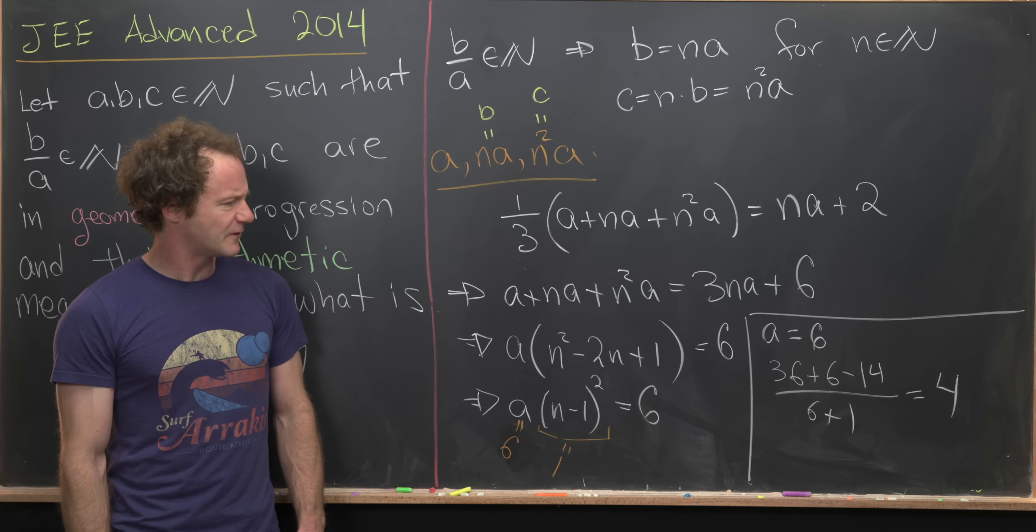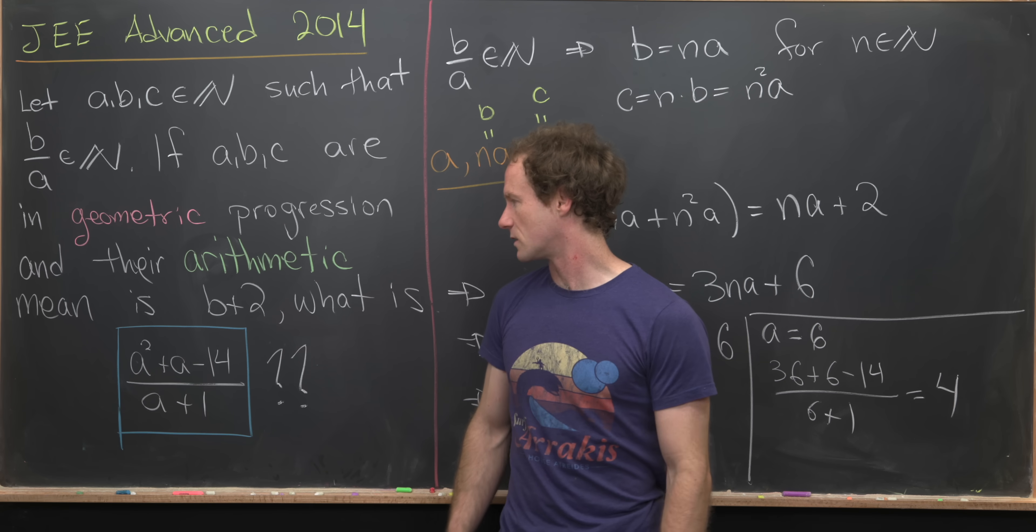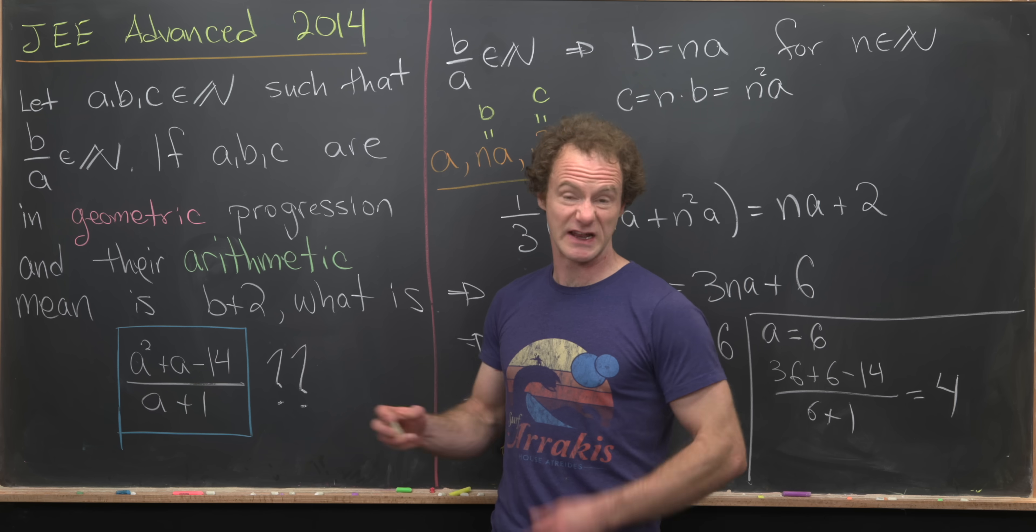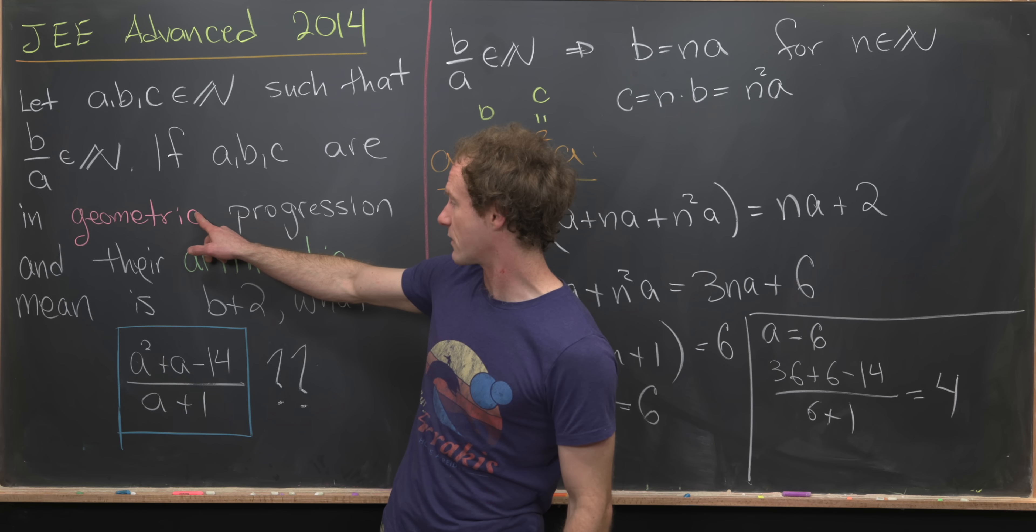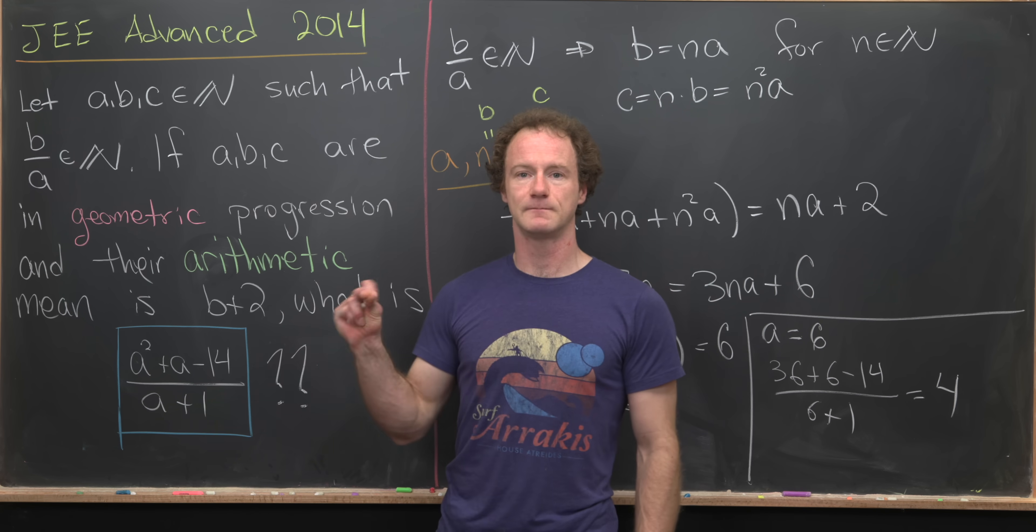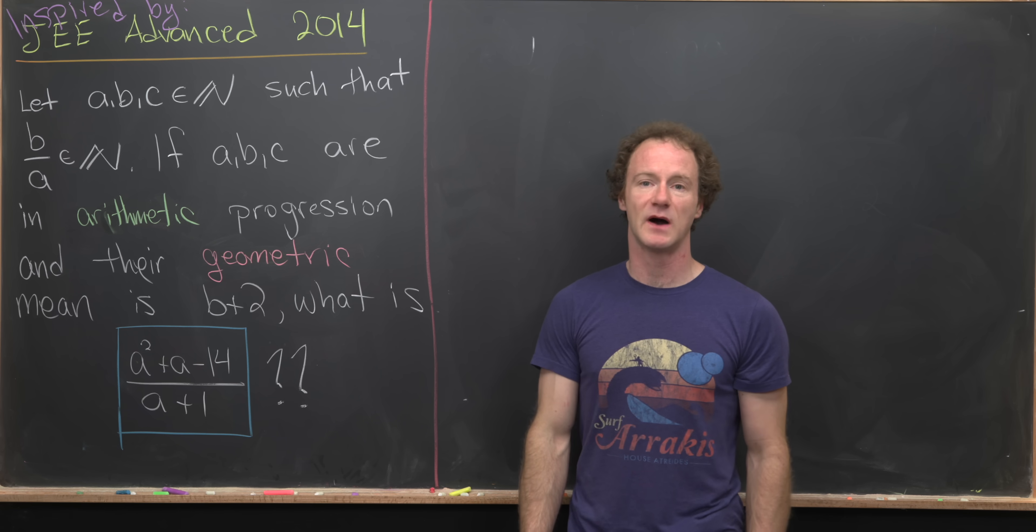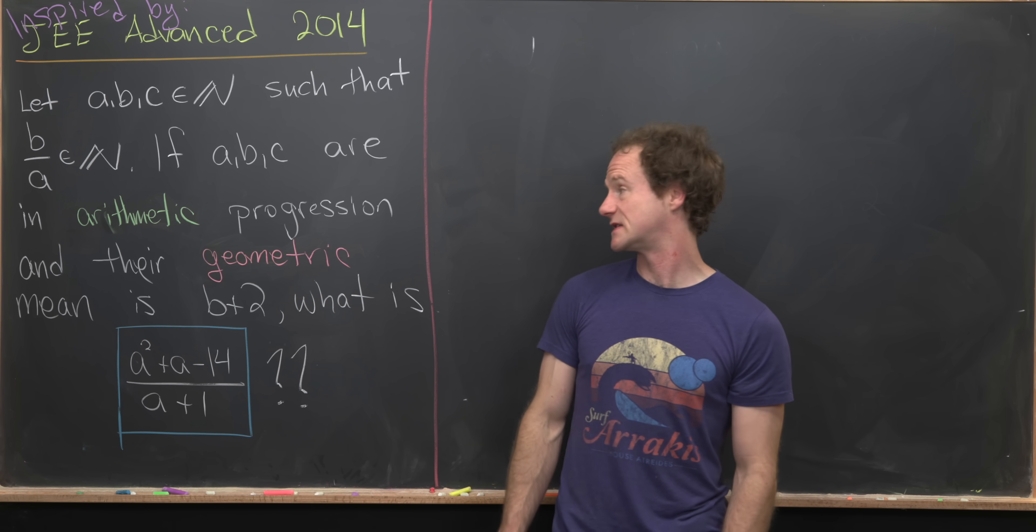So maybe what I want to do before we finish this off is tweak this problem a little bit and see if we can get some other interesting result. So I want to replace geometric with arithmetic and arithmetic with geometric. So on the last board, we found out that this quantity in the blue box was equal to 4 and that came from A being equal to 6.